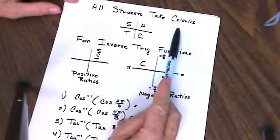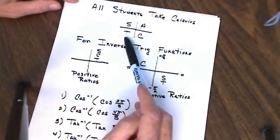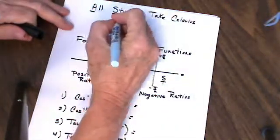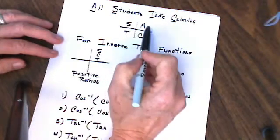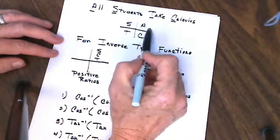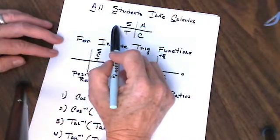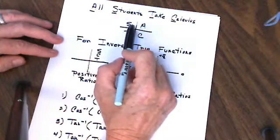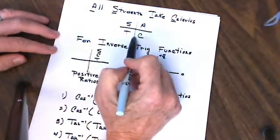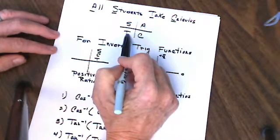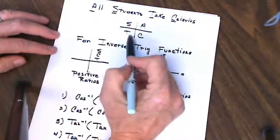We have 'All Students Take Calculus' — that's a memory device we very often use in trigonometry class to remember in which quadrants our ratios are positive. Taking the first letter of each word: ASTC, going counterclockwise. In quadrant one, all ratios for all six trigonometric functions will be positive. However, in quadrant two, between π/2 and π, only sine and its reciprocal cosecant will produce positive ratios — the other four will be negative. Between π and 3π/2, only tangent and cotangent produce positive ratios. And between 3π/2 and 2π, only cosine and its reciprocal secant produce positive ratios.